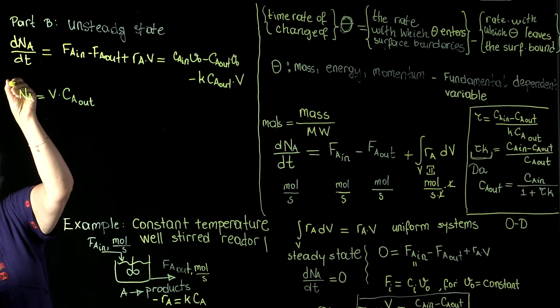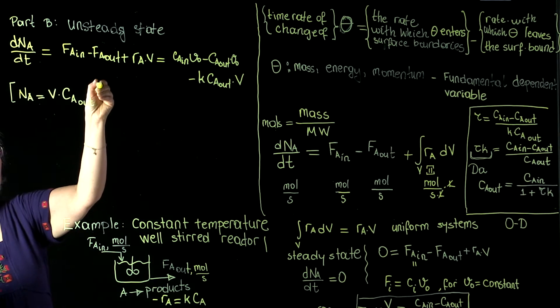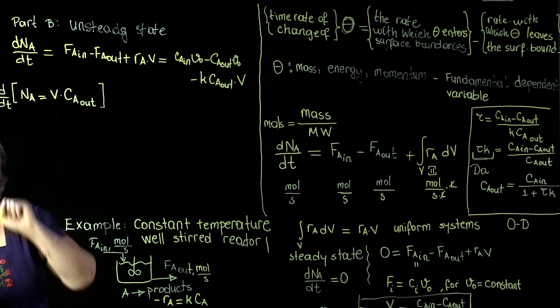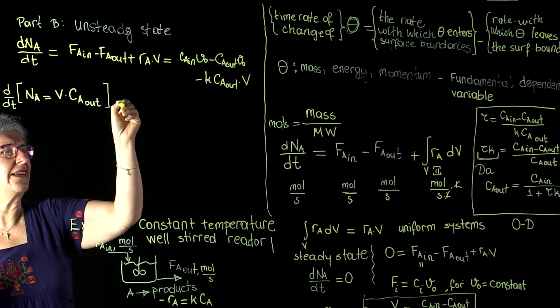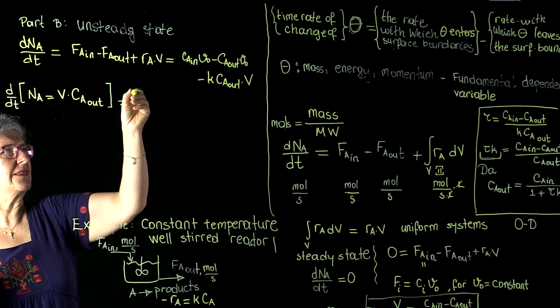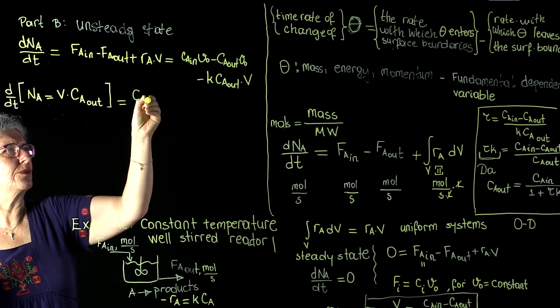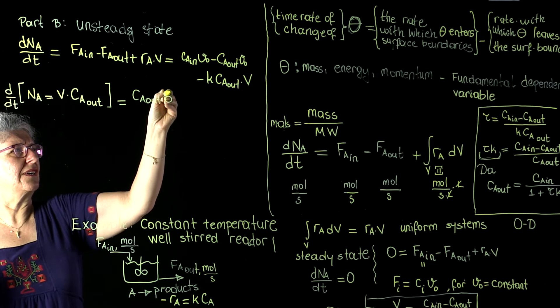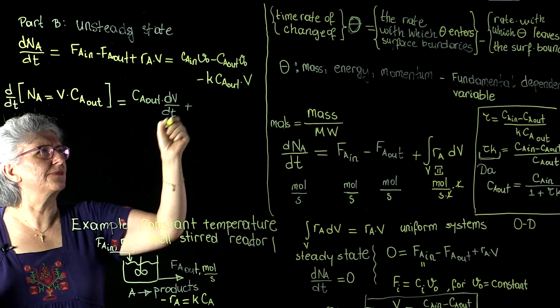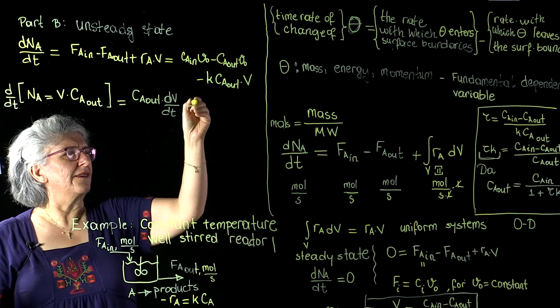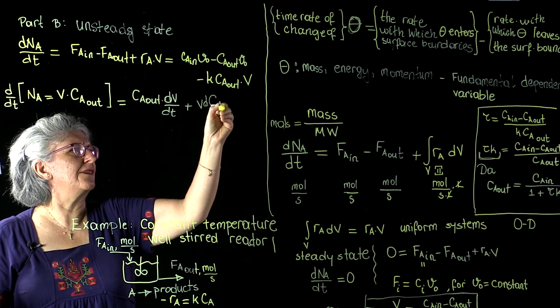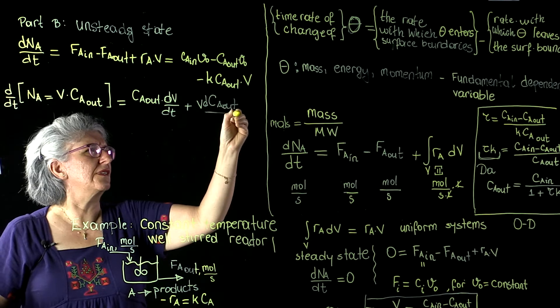And as such, if we are going to take the total derivative of this, we are going to end up with two pieces of information: CA out times dV/dt plus V times dCA out/dt.